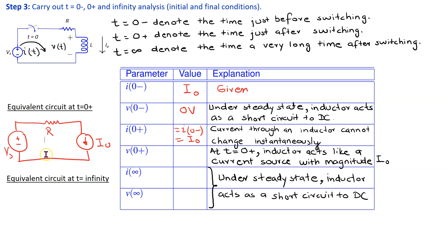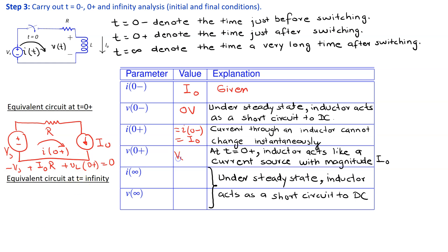This is a single-loop circuit where the current is I(0 plus). Applying Kirchhoff's voltage law to the loop gives minus Vs plus I0·R plus V_L(0 plus) equals 0. Therefore, V_L(0 plus) equals Vs minus I0·R, allowing us to find the voltage across the inductor at time T(0 plus).